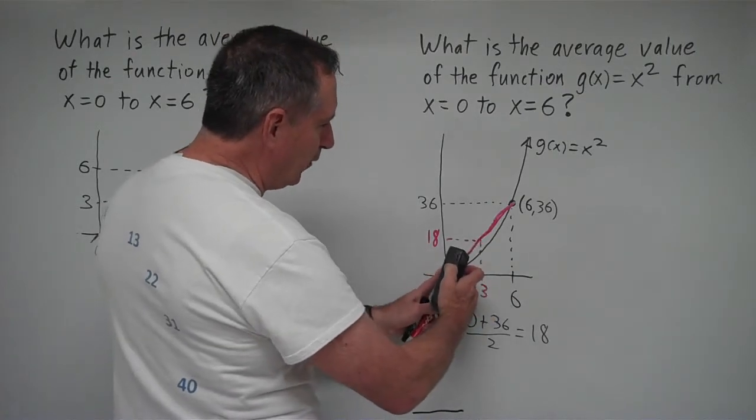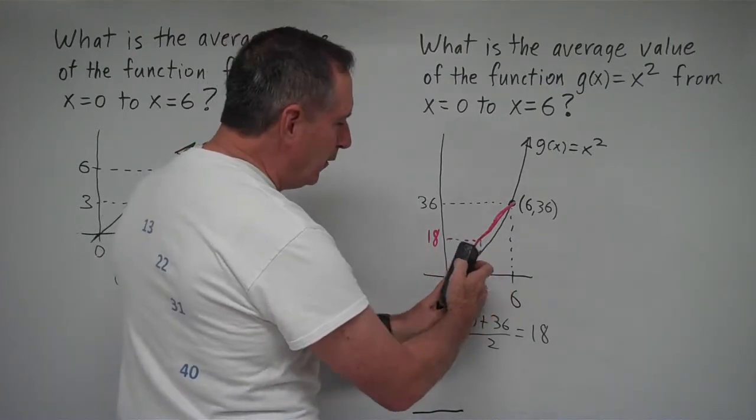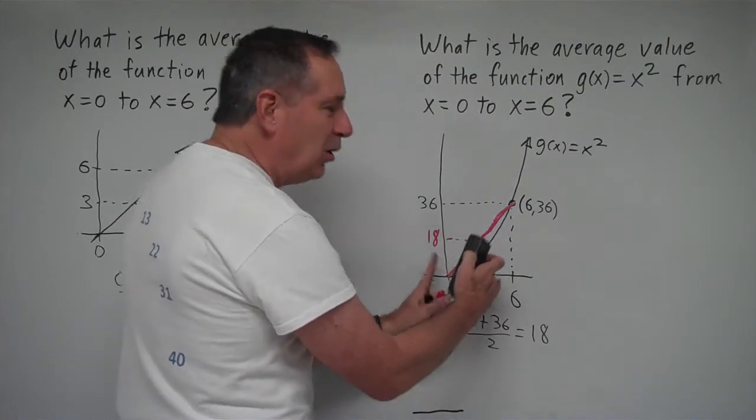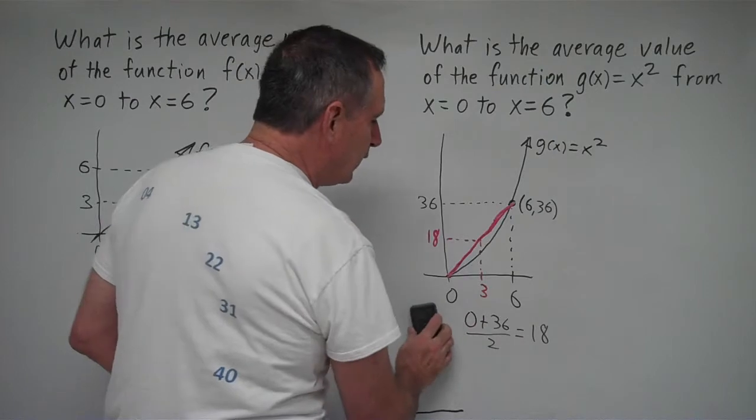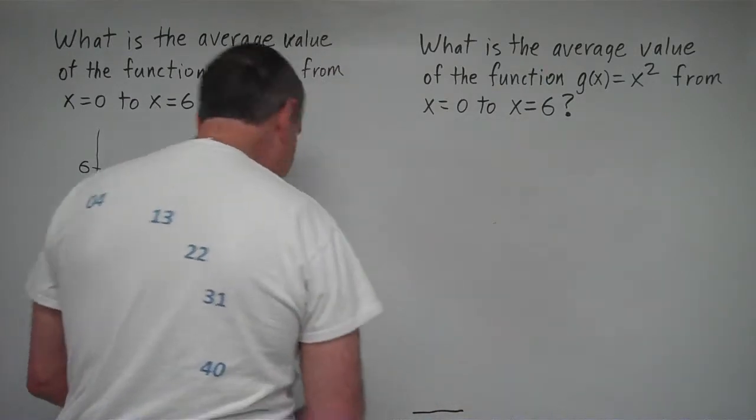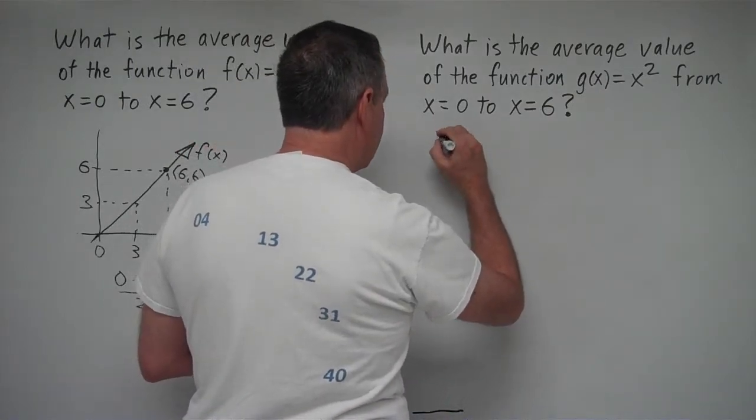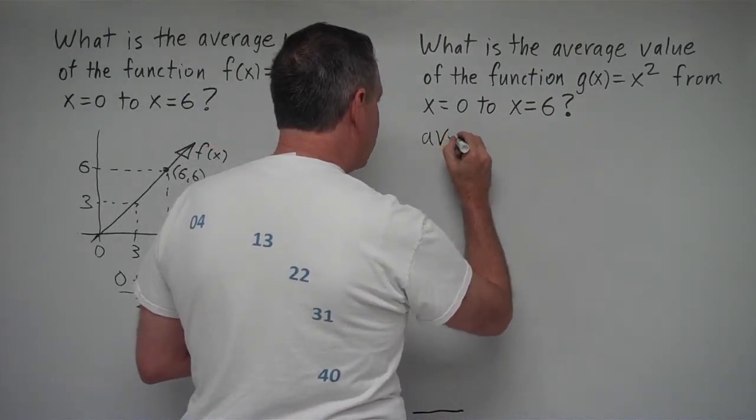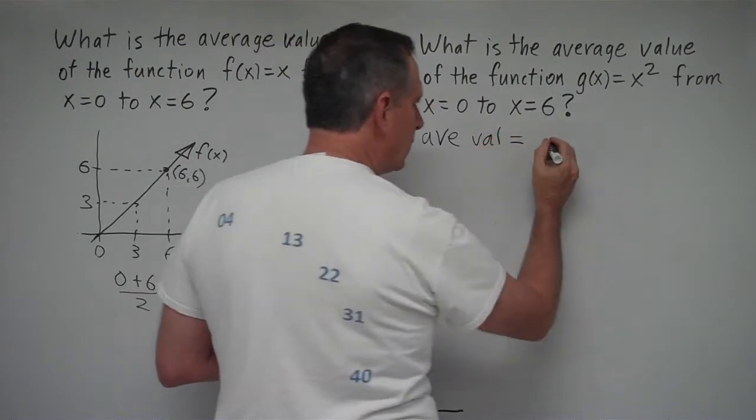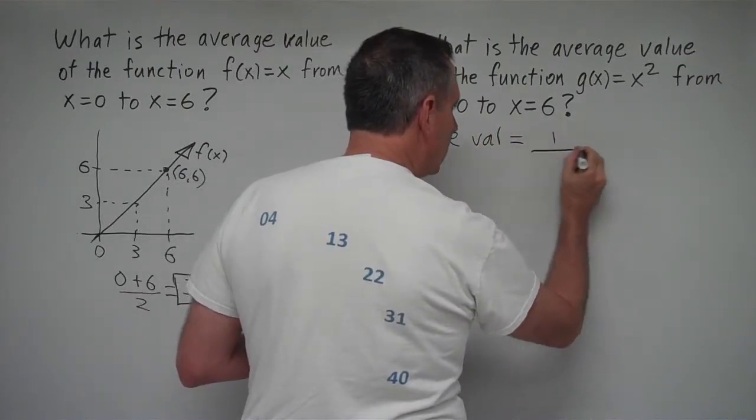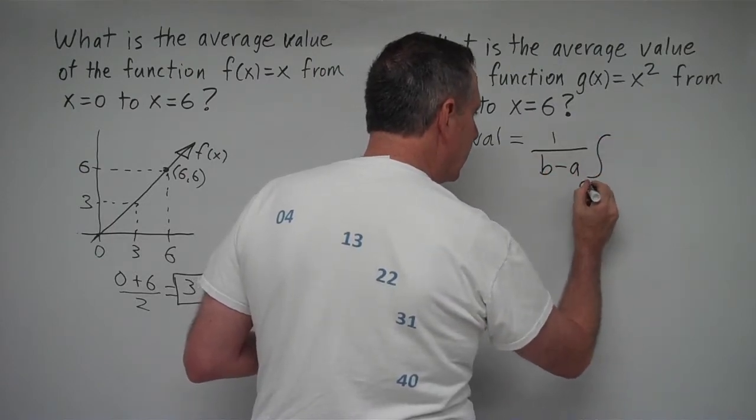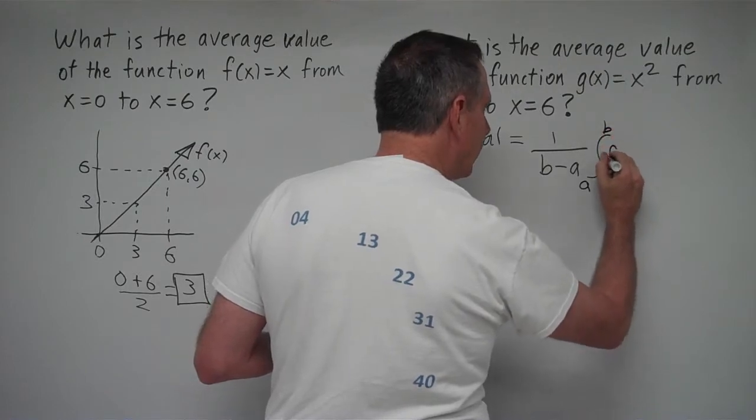We don't know where yet exactly, but we need to use calculus to find this out. In calculus, what we do is we take sort of an infinite number of tiny rectangles, infinitesimally small rectangles, to get the exact average value. And the average value formula is, average value equals 1 over b minus a times the integral from a to b of f(x) dx.